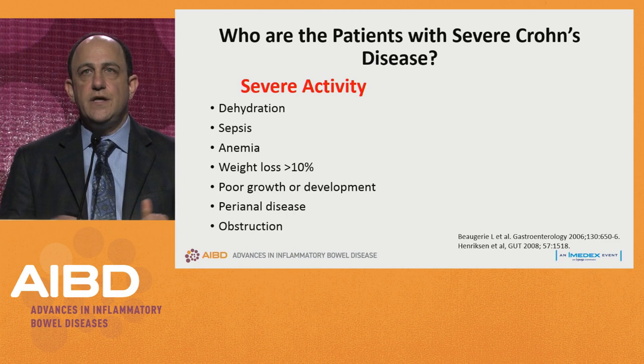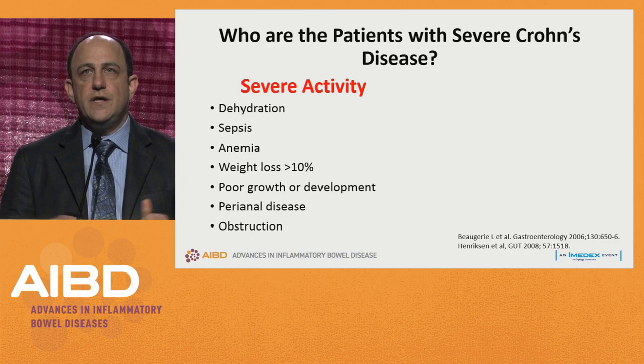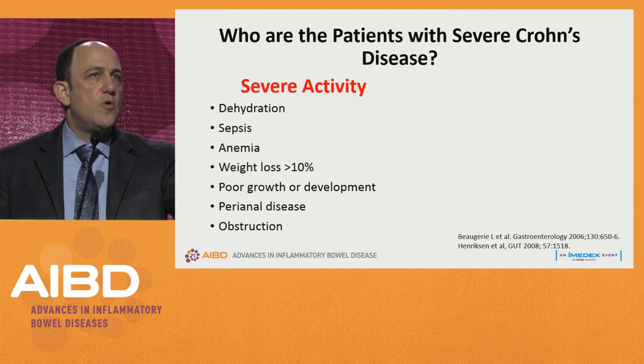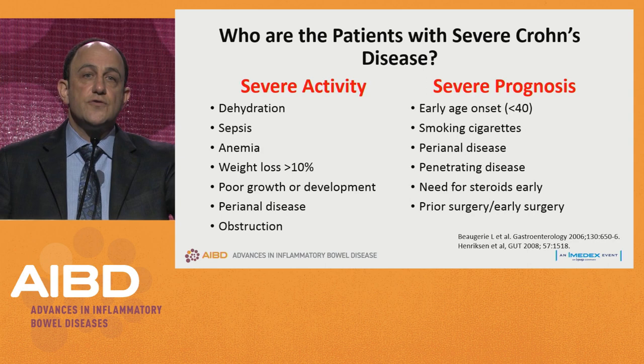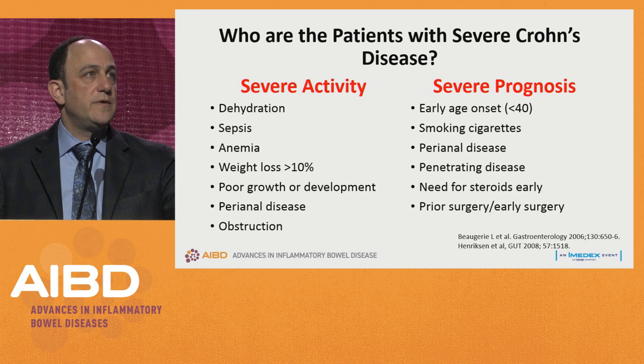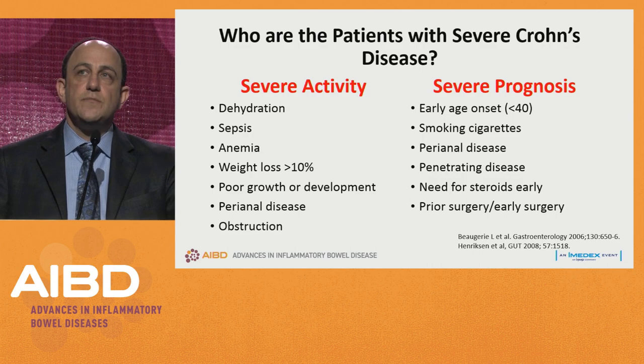Severe activity could be defined as dehydration, sepsis, anemia, weight loss more than 10%, poor growth or development, active perianal disease, or bowel obstruction. A severe prognosis includes younger age of onset, smoking, perianal disease, penetrating disease especially at presentation, the need for early surgery or prior surgeries, and the need for steroids early. If patients have these prognostic markers, at a minimum you should be stratifying them to a more careful monitoring strategy.